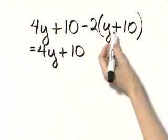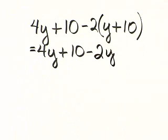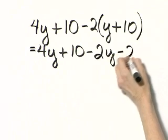Negative 2 times Y, that's negative 2Y. I'll write minus 2Y. And then negative 2 times 10, that's negative 20. I'll write minus 20.